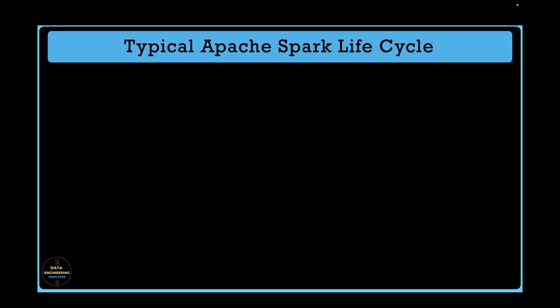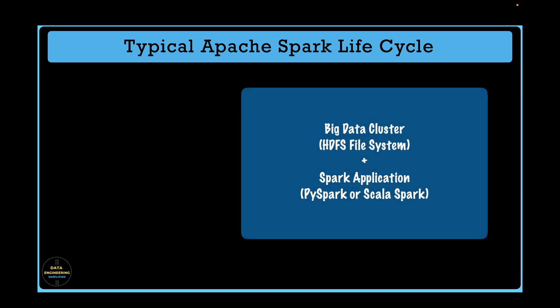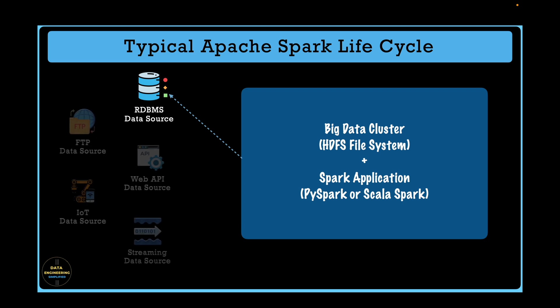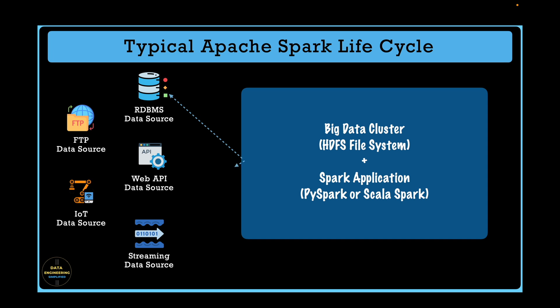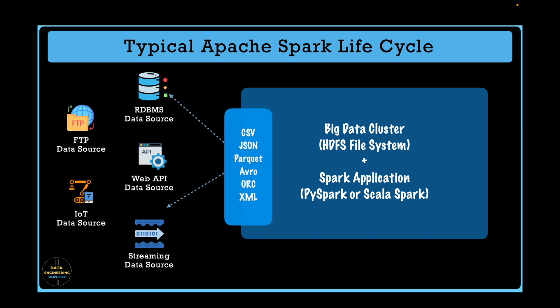Let's quickly discuss a typical Spark application, which sources or ingests data from different sources and then runs computational workloads. It could be a Hadoop-based cluster or a Databricks cluster hosting your Spark runtime environment. In 80% of cases, Spark applications source data from RDBMS systems or, in many legacy deployments, using Apache Sqoop or some integration tool. The other 20% could include sources like Web APIs, FTP locations, IoT data, or streaming data. The data acquisition process writes data in different file formats like CSV, JSON, Parquet, Avro, ORC, or XML.